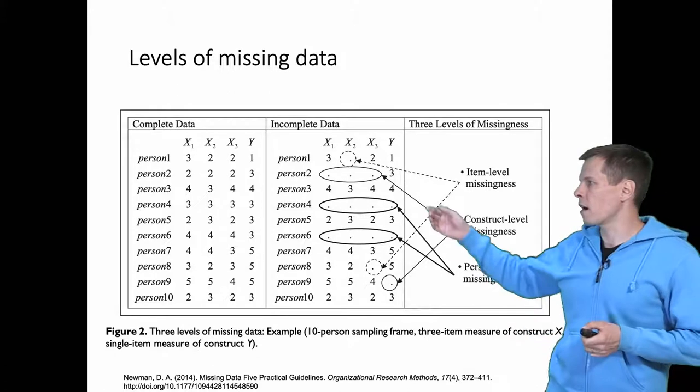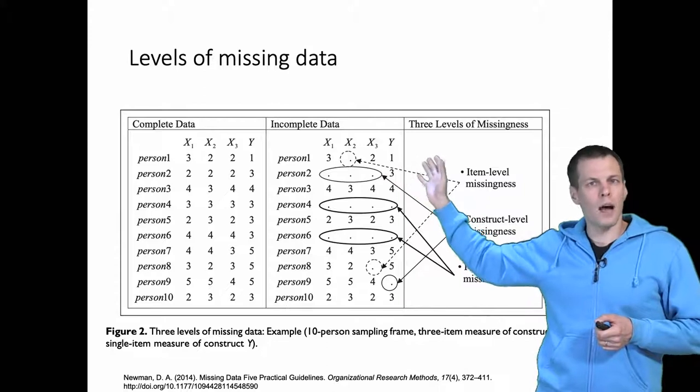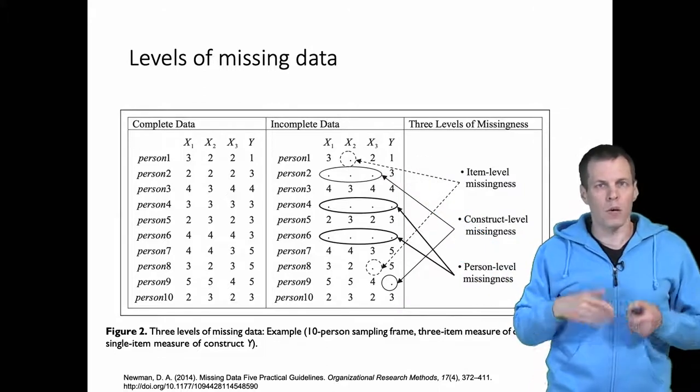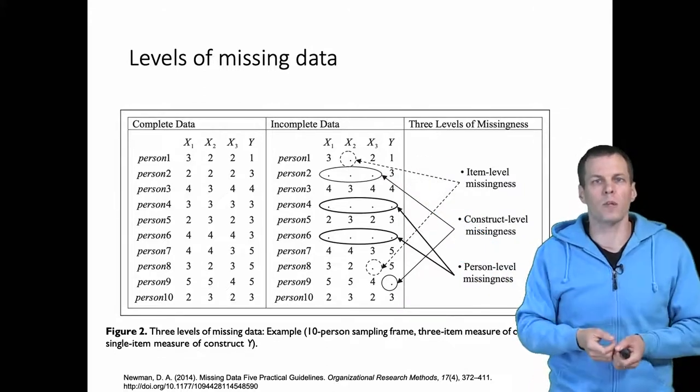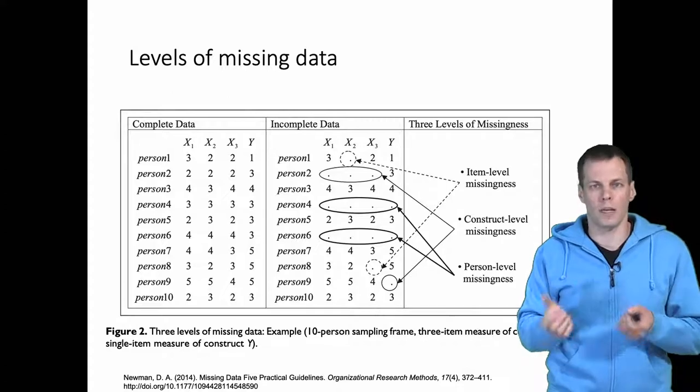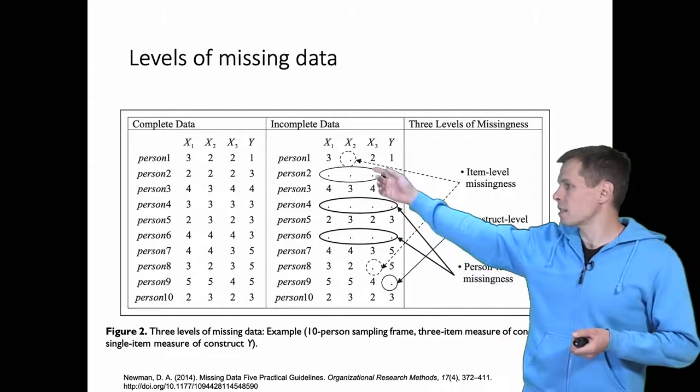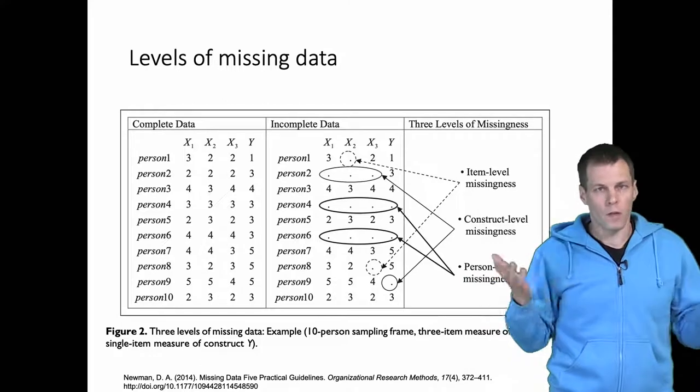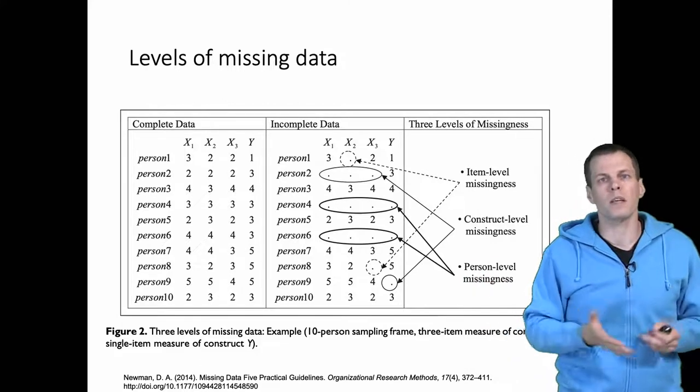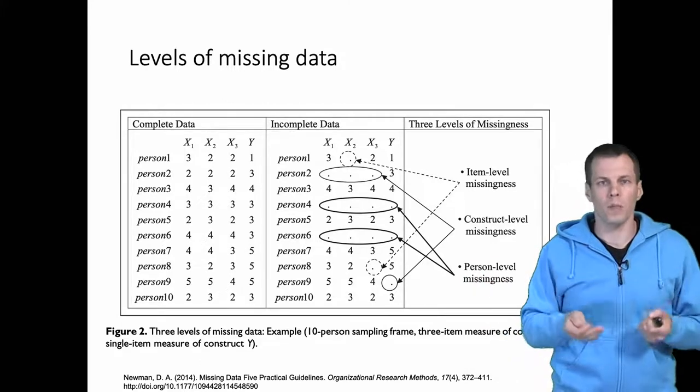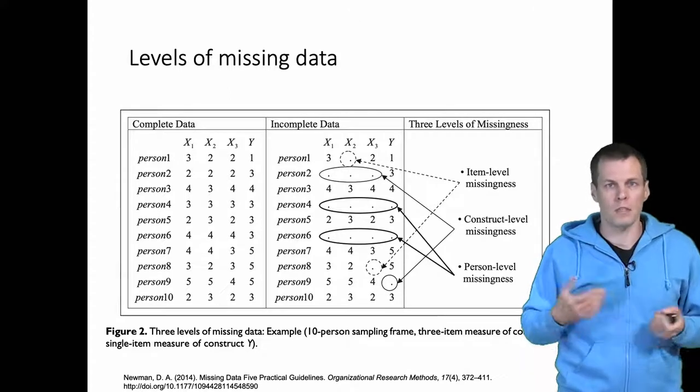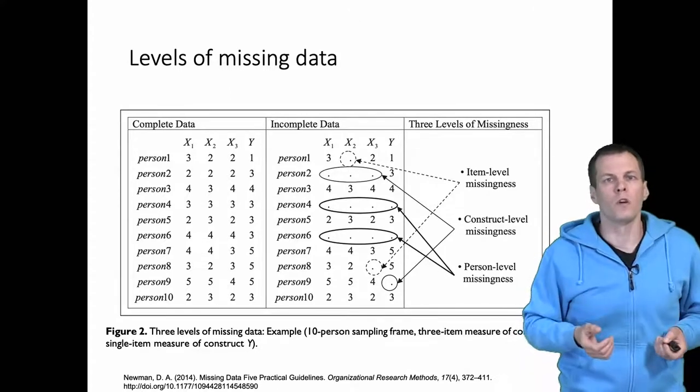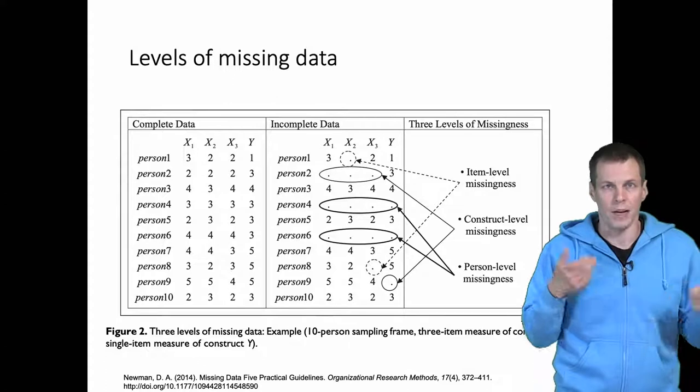This refers to a scenario where we have a multiple item scale, so we have construct X measured with three items X1, X2 and X3, and there is some missingness to one of these questions. This would be very typical in a survey based study when an informant thinks that one of the questions in the scale is either difficult to answer or does not apply to them and they will leave it blank.